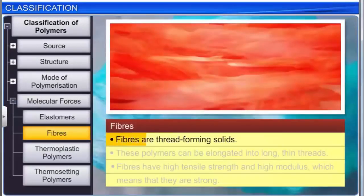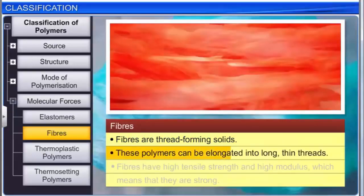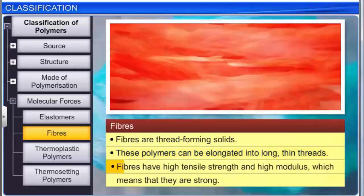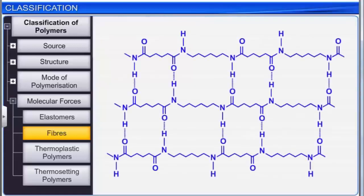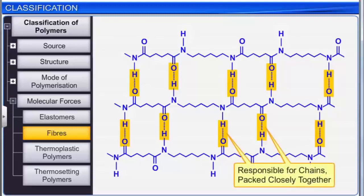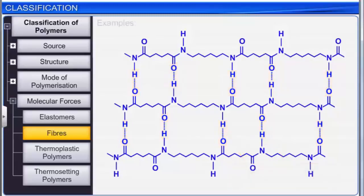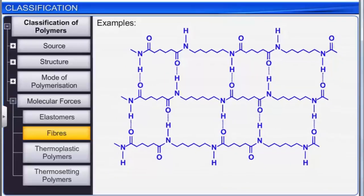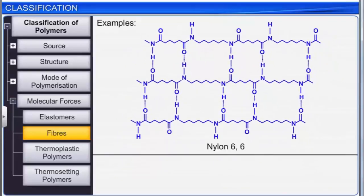Fibers are thread-forming solids, as these polymers can be elongated into long, thin threads. They have high tensile strength and high modulus, which means they are strong. Hydrogen bonding exists between the chains, because of which the chains are packed closely together. Examples of polymers that form fibers are polyamides such as nylon-6,6 and polyesters.